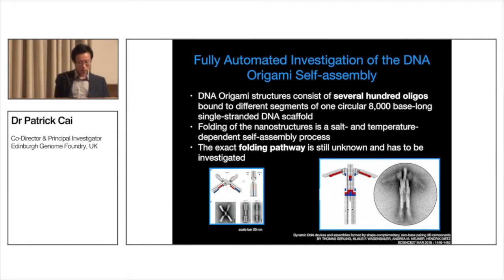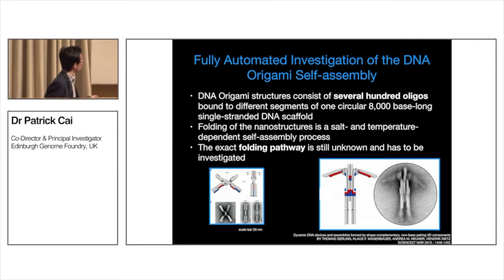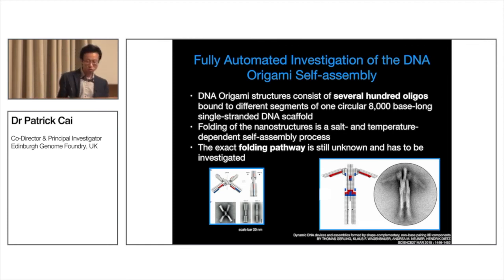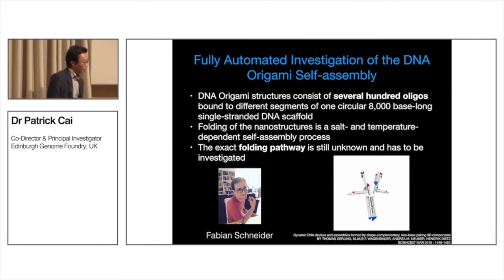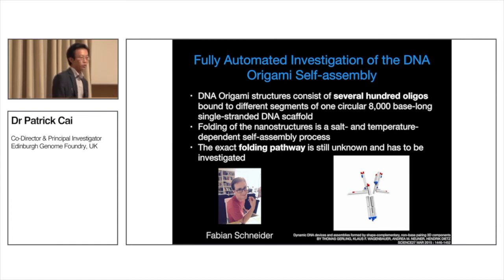I'm going to tell you about something different in the next few slides. A student, Fabian Schneider, from my collaborator's group has been doing DNA origami. DNA origami is a structure formed from hundreds of oligos that interact and fold into different shapes. Watch this movie carefully — this is one of the structures Fabian works on. You can see it folds into a transformer — isn't that cool! Under different temperatures and salt conditions you can direct how it folds.